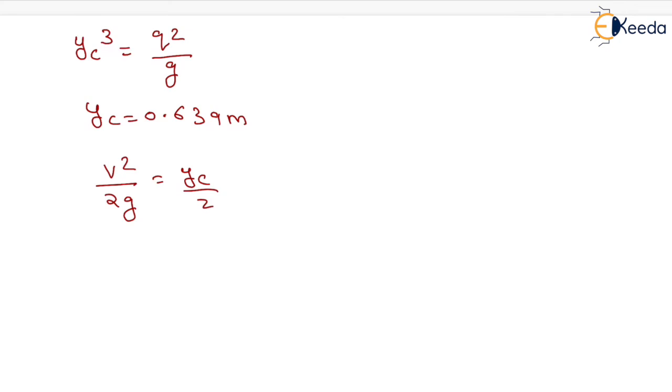Now after putting the value, that is v square upon 2 into 9.81, the critical depth value is 0.639 divided by 2, we will have velocity equals 2.504 meter per second.